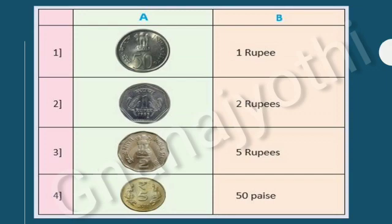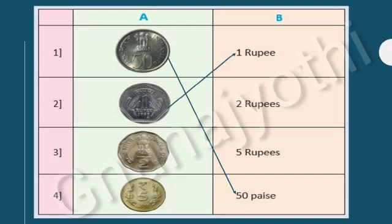Look at the first question. The value of this coin is 50 paise. Look at the second question. The value of this coin is 1 rupee. Look at the third question. The value of this coin is 2 rupee. Look at the fourth question. The value of this coin is 5 rupee.